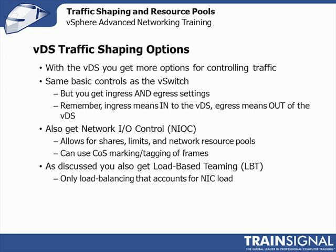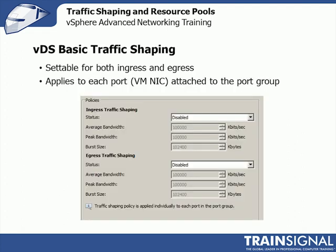As discussed in a previous lesson, you also get load-based teaming — the only load balancing that accounts for physical NIC load. So here are the basic traffic settings, but you can split them for ingress and egress, settable for both, applying to each port or VMNIC attached to the port group. You just go through and set average, peak, and burst however you want to.